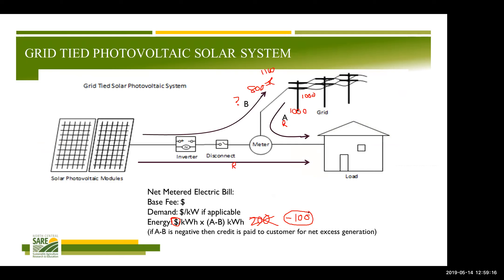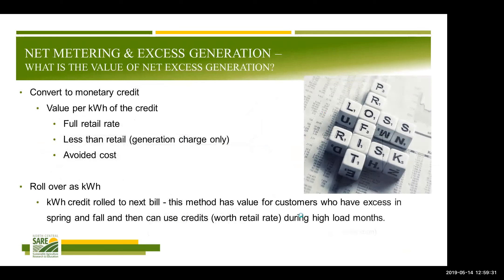What if in a month I used 1,000 kWh from the grid but generated 1,100 kWh? Then instead of 200 kWh, I would have negative 100 kWh. A thousand of what went onto the grid is worth full retail rate, and the remaining 100 kWh is worth whatever my state policy says — in Nebraska that's avoided cost or less than retail, in Michigan it's retail rate. When there's a credit, that credit can roll over. There are a few states that allow you to roll it over per kilowatt-hour rather than converting to dollars.